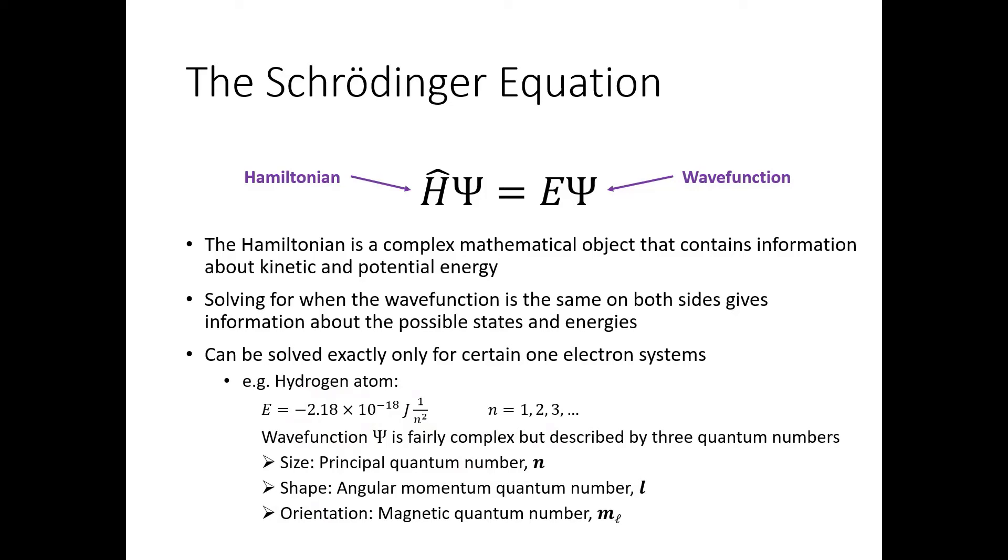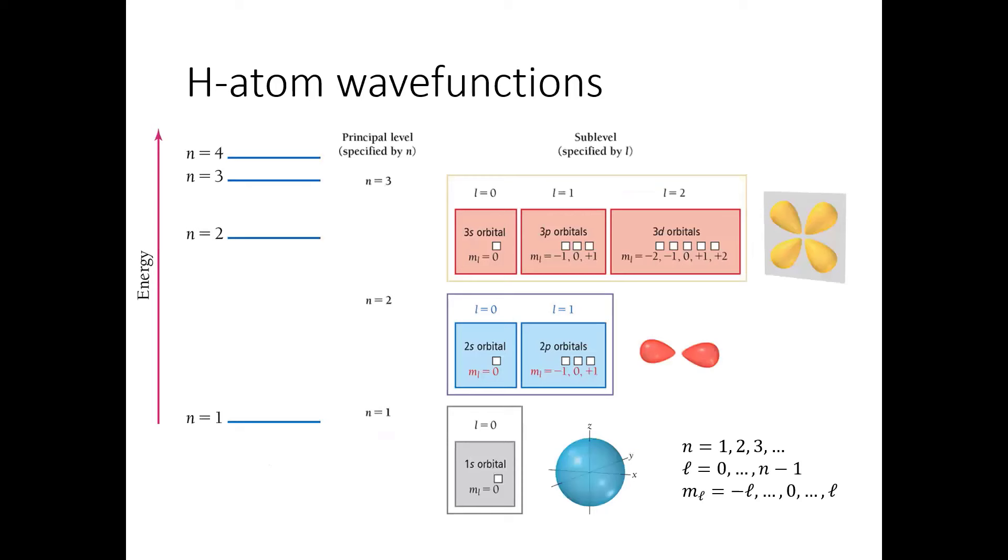These different solutions, which have different energies, correspond to different wave functions. And those wave functions or orbitals can be described by three quantum numbers. So the three quantum numbers are n, which tells us about the size of the orbital. l, which tells us about the shape. And m sub l, which tells us about the orientation. So the principal quantum number n is what tells us about the energy. For a hydrogen atom, that's all you need to tell you about the energy.